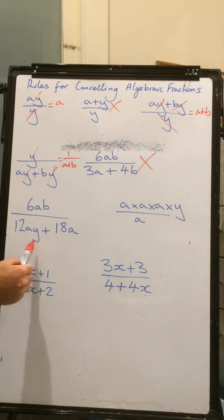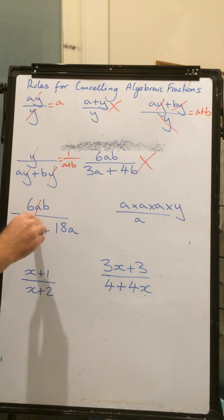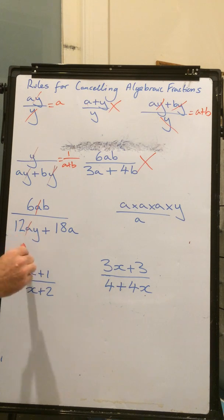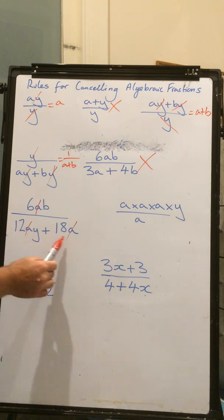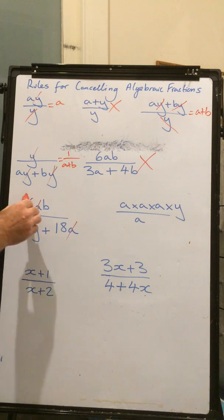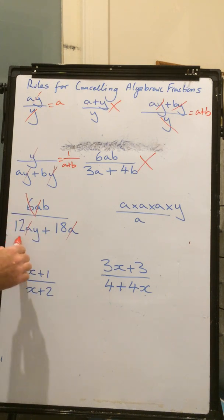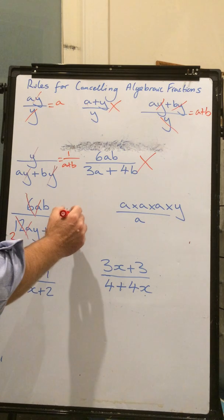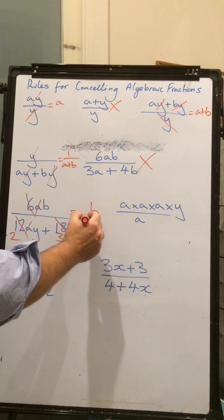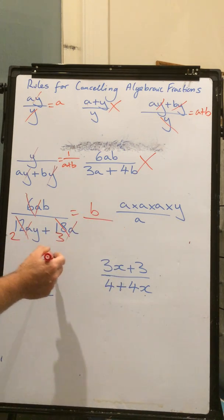However, in this case here, look, that a can cancel out that a and that a. Perfect. And, now, do we finish? No. Because, now, I can see there's a number that goes into 6, 12, and 18. 6 goes into 6 once, 6 goes into 12 twice, 6 goes into 18 three times. So, all we now end up with is b over 2y plus 3.